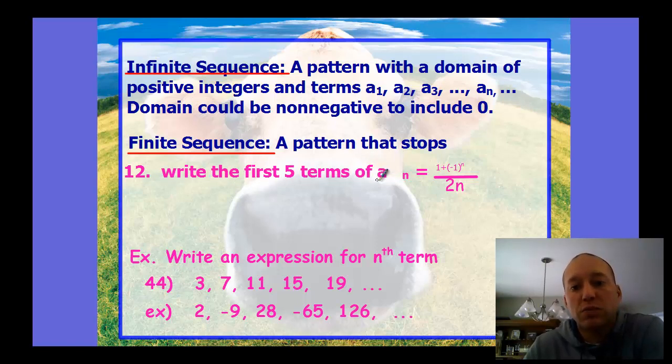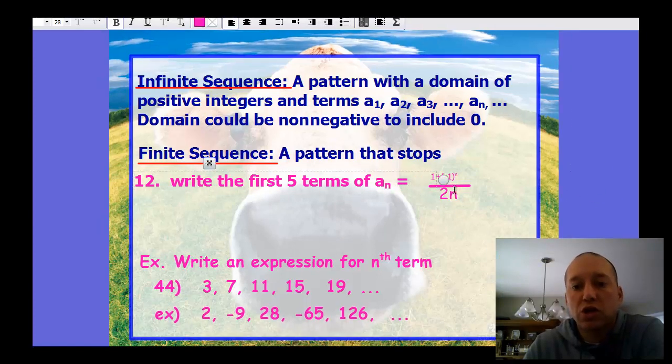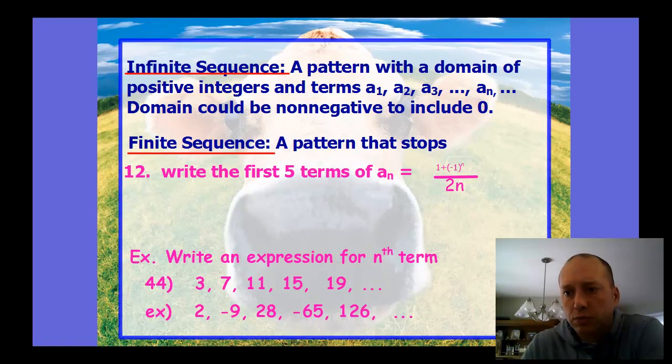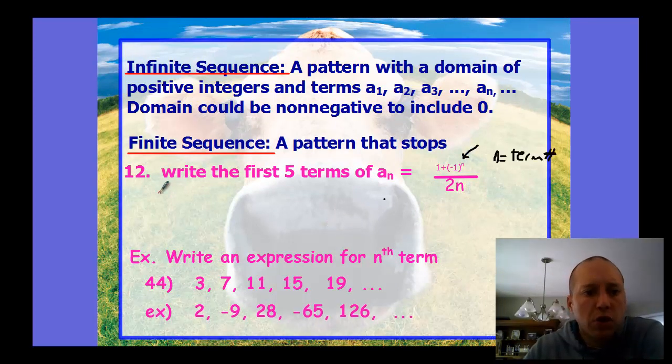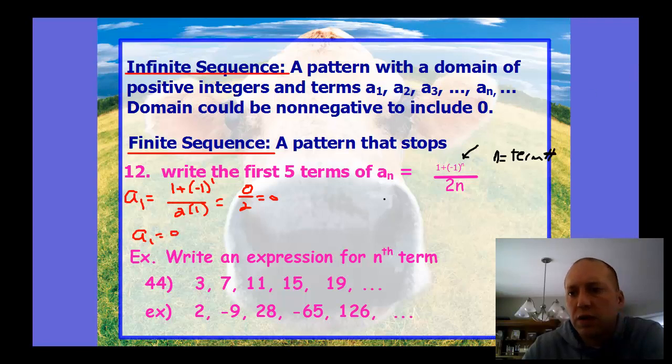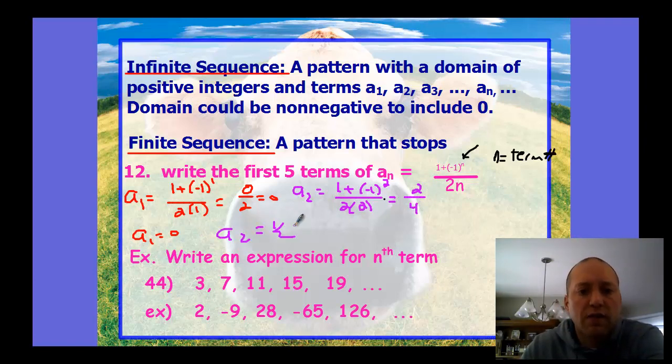Here, write the first five terms of this pattern. This is a formula or equation giving us the pattern. Our n value is the term number. To find each term in the pattern, we plug in the term number for n and evaluate. For term 1, we'd have 1 plus negative 1, which is 0 over 2, which is 0. So a₁ is 0. For the second term a₂, it would be 1 plus negative 1 squared over 2 times 2, which is 1 plus positive 1 or 2 over 4, which equals one half.